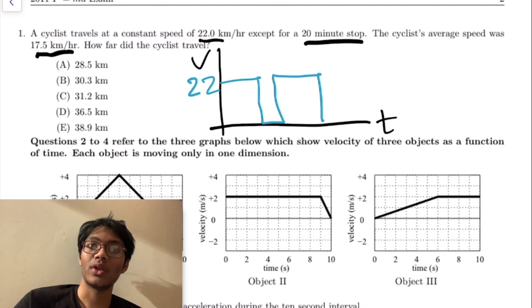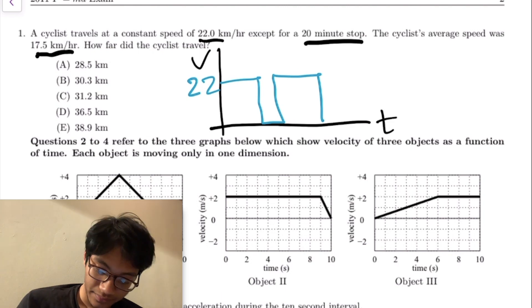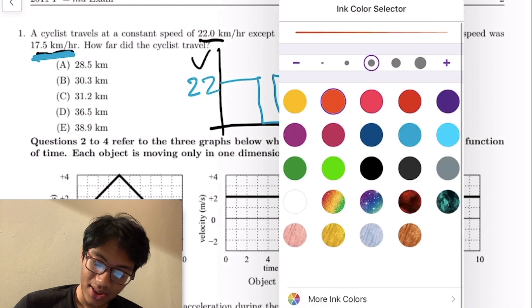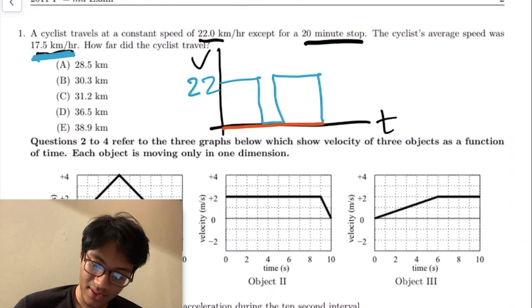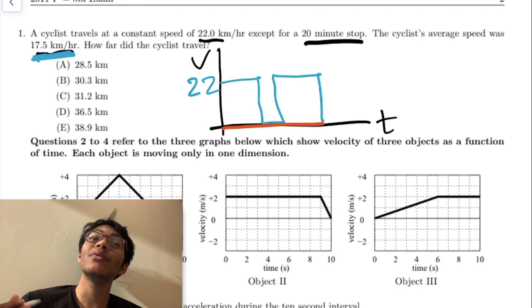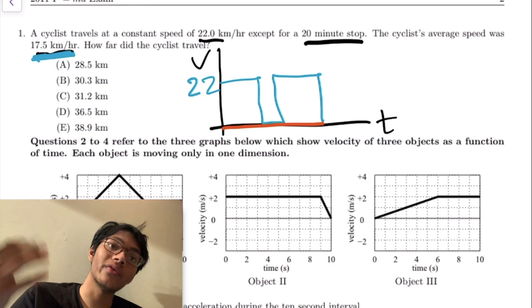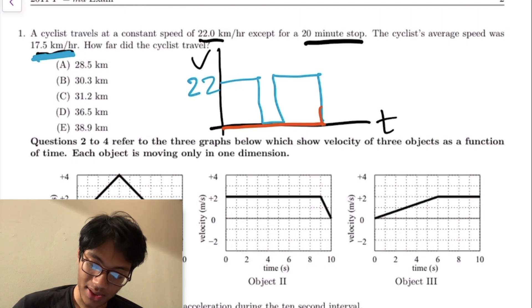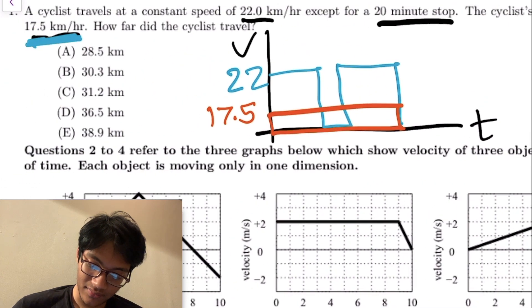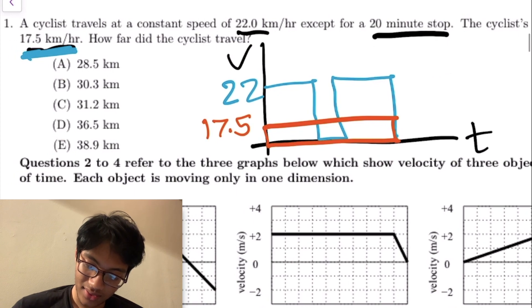Something else also happens. We know that his average speed is 17.5. Here's something I like to do: average speed I like to represent as a rectangle whose area is the same as the area under the actual curve, but whose length is this whole entire time. This would be 17.5. Let's say there's a few time slots here - let's call this t1, t2, and t3.